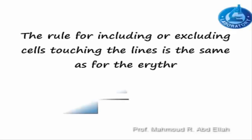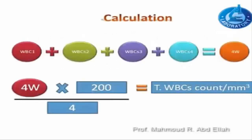The total WBC count per cubic millimeter equals the sum of white blood cells in the four squares, multiplied by 200, divided by 4.